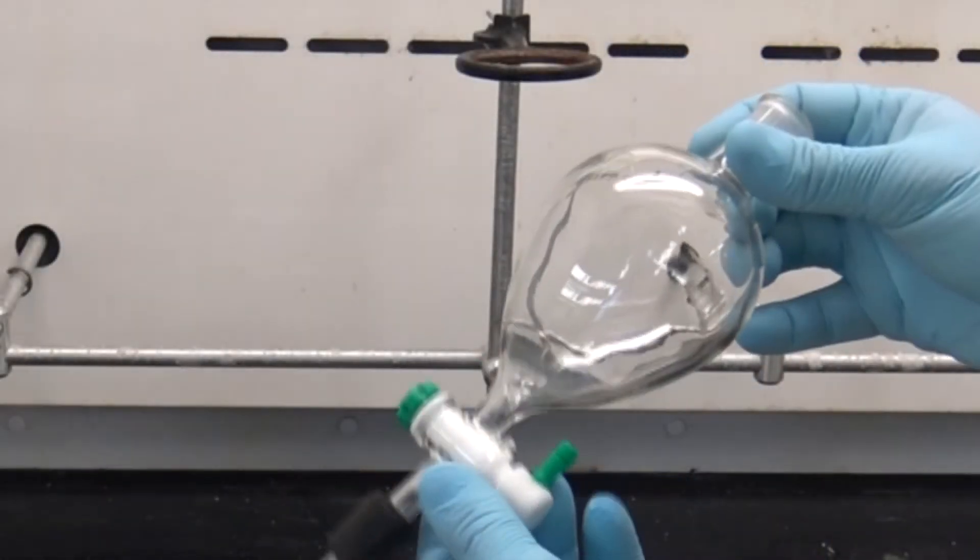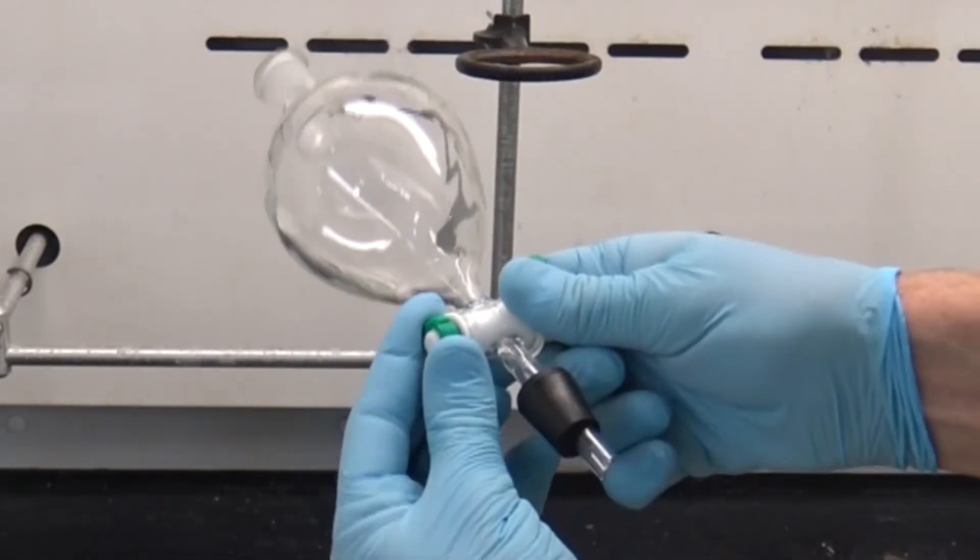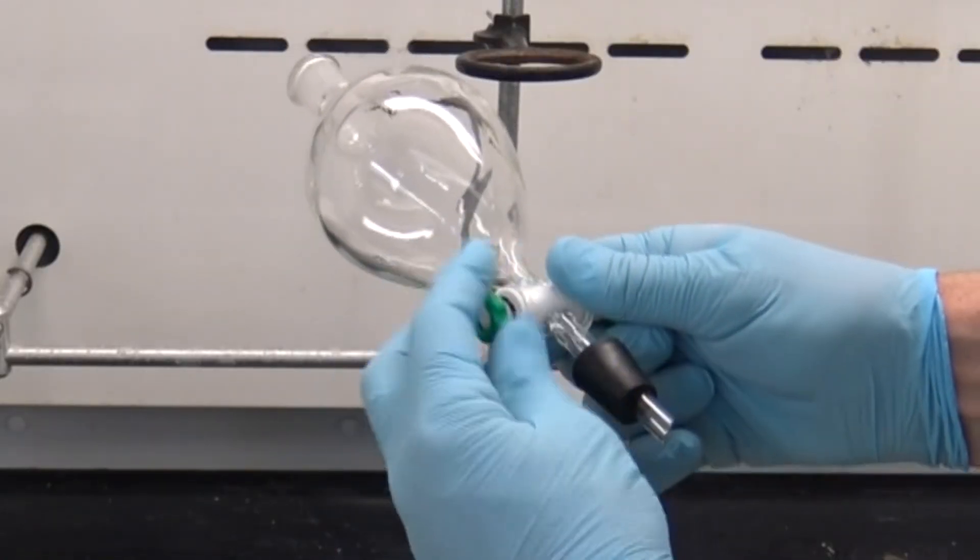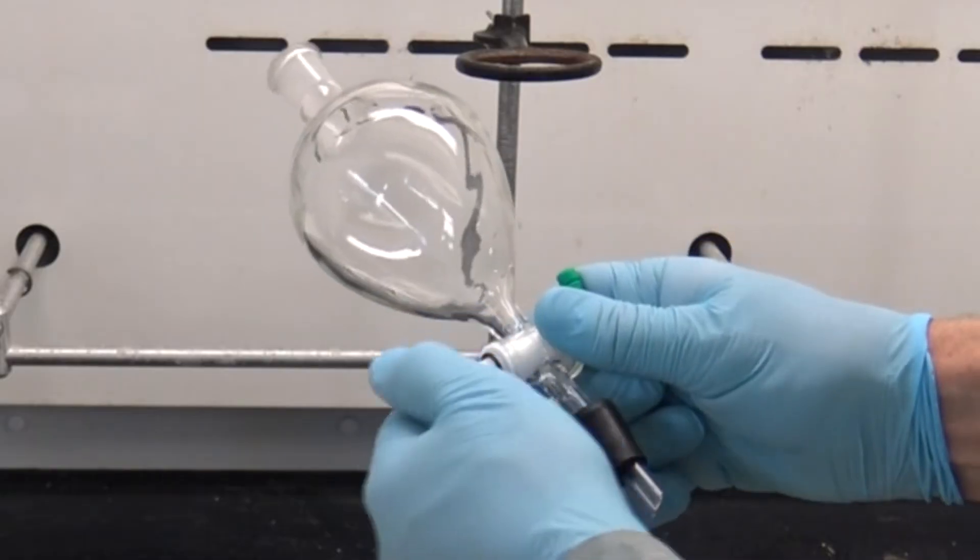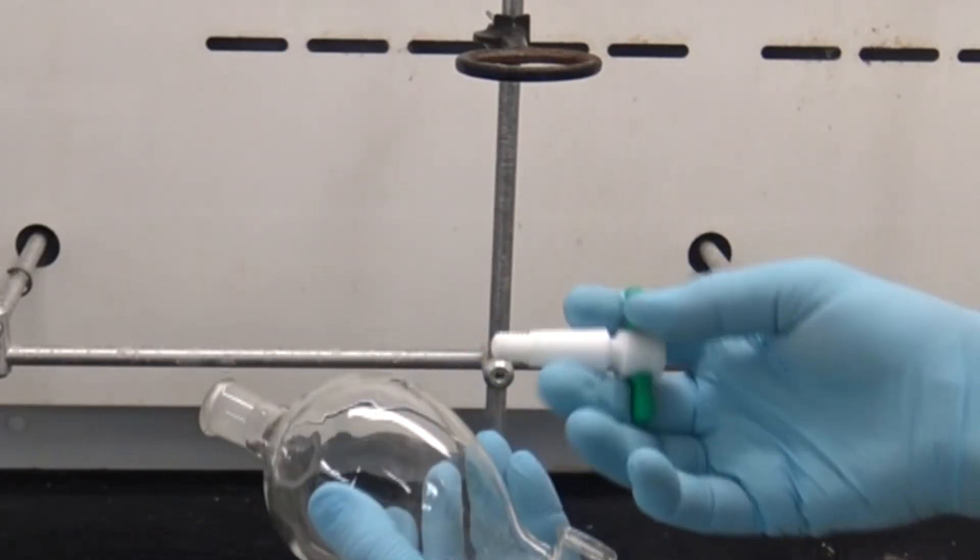Now let's have a closer look at that separatory funnel. The separatory funnel has a Teflon stopcock at the base. This allows us to remove liquids by draining them out of the funnel. It's secured with a nut and washer on the opposite side from the control.